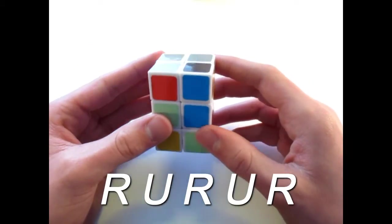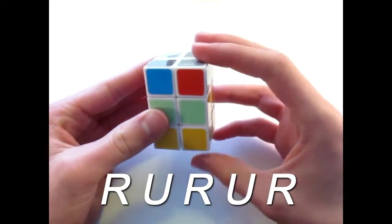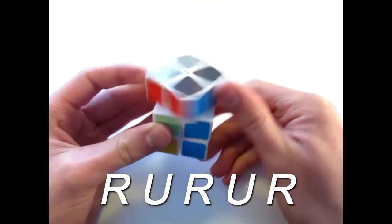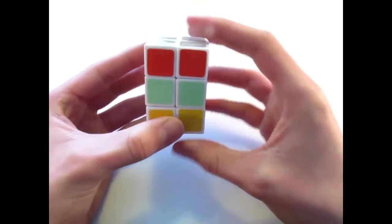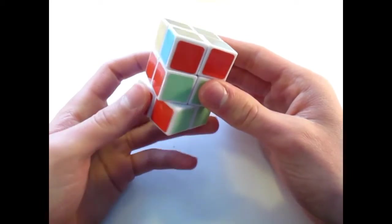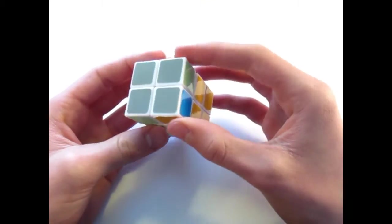Now this will fix itself. So the algorithm, you do it again, r u r prime u prime r. There you go. Now you have the bottom two layers. And all you have to do is swap these two corner pieces.